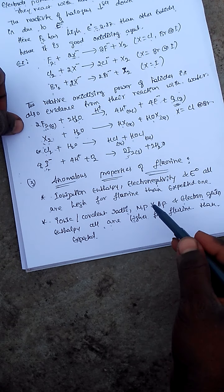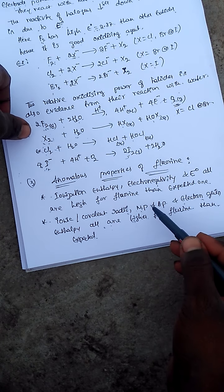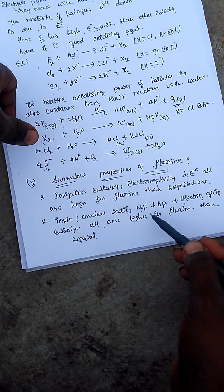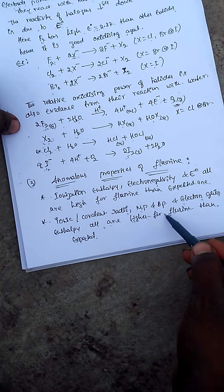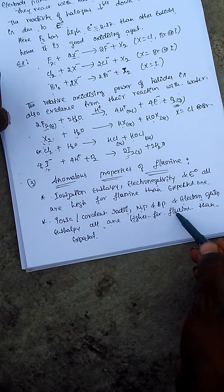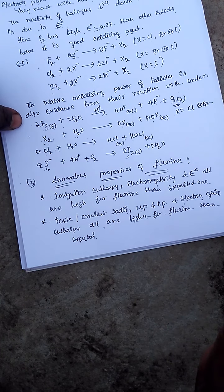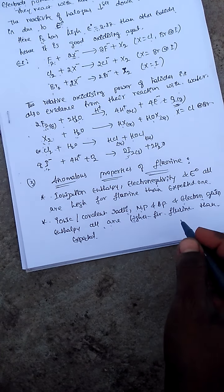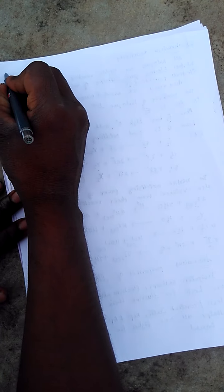For example, atomic radius and ionic radius are lower compared to the expected value. This is the second anomalous property.